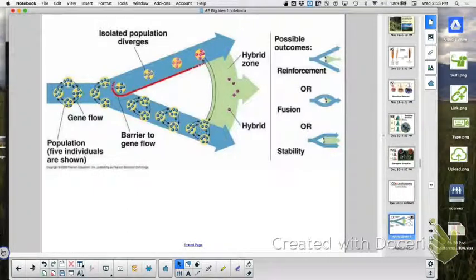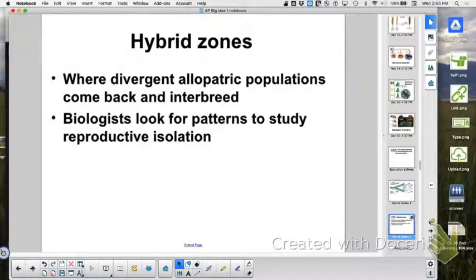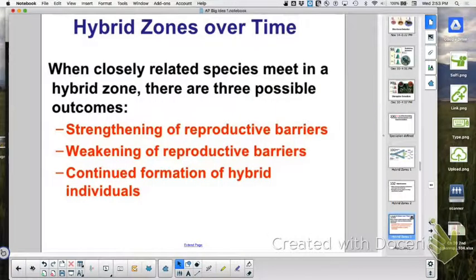Usually you have some initial barrier, but then when that barrier is removed, you have these different options that can occur as a result. Hybrid zones, what does that mean? Where they're meeting. There are three possible outcomes: strengthening of the reproductive barriers, which will maintain speciation, weakening of it, or continued formation of hybrids. If you have those hybrids, that has the potential of forming a third species, because you could have the ones that diverged and then you could have these hybrids forming a third species.